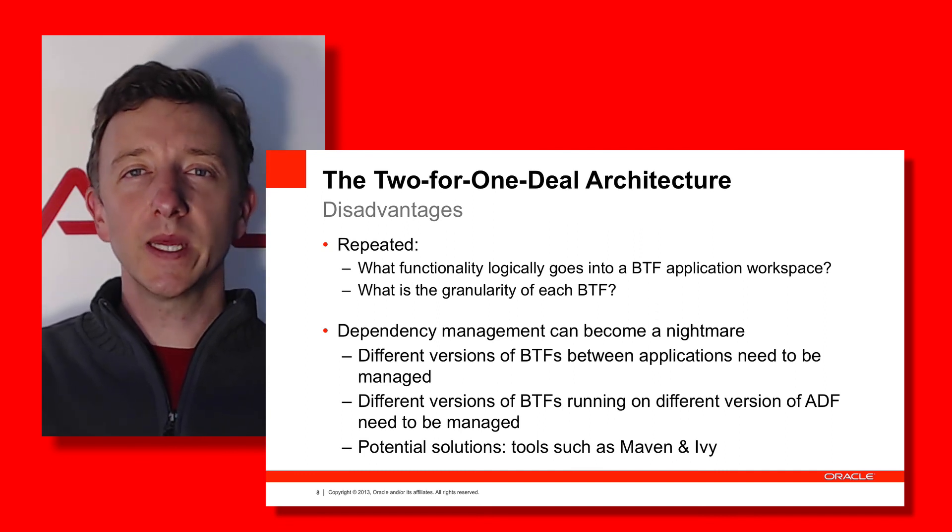That concludes our look at the two-for-one deal pattern. In the next two episodes we'll look at the cylinder pattern and the pillar pattern — both are good choices for large application developments, with their own pros and cons meeting different requirements. Thanks again for your time on the ADF Architecture TV channel, and we hope to see you in the next episode very soon.